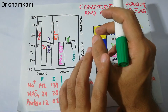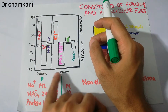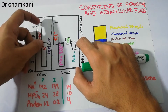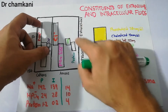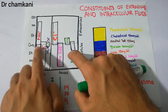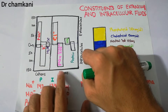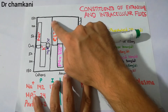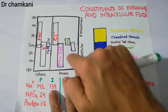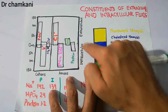Electrolytes are of two types: the positive ions are the cations, and the negative ions are the anions. Some cations are higher in concentration in the extracellular fluid — outside the cell — while some cations are higher in concentration in the intracellular fluid. Similarly, some anions are in higher concentration in the extracellular fluid, while some negative ions are higher in concentration in the intracellular fluid.